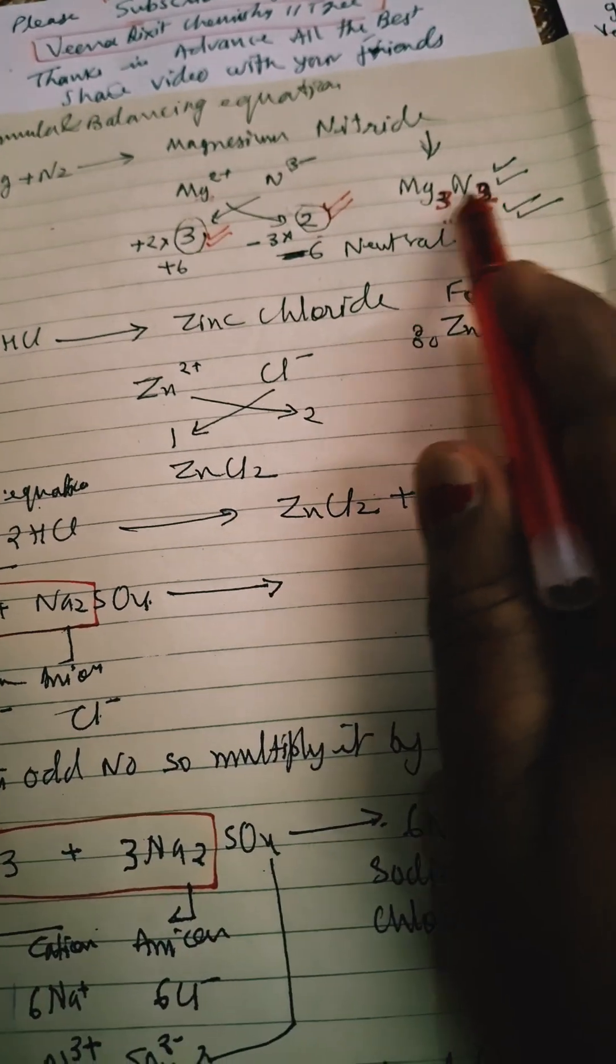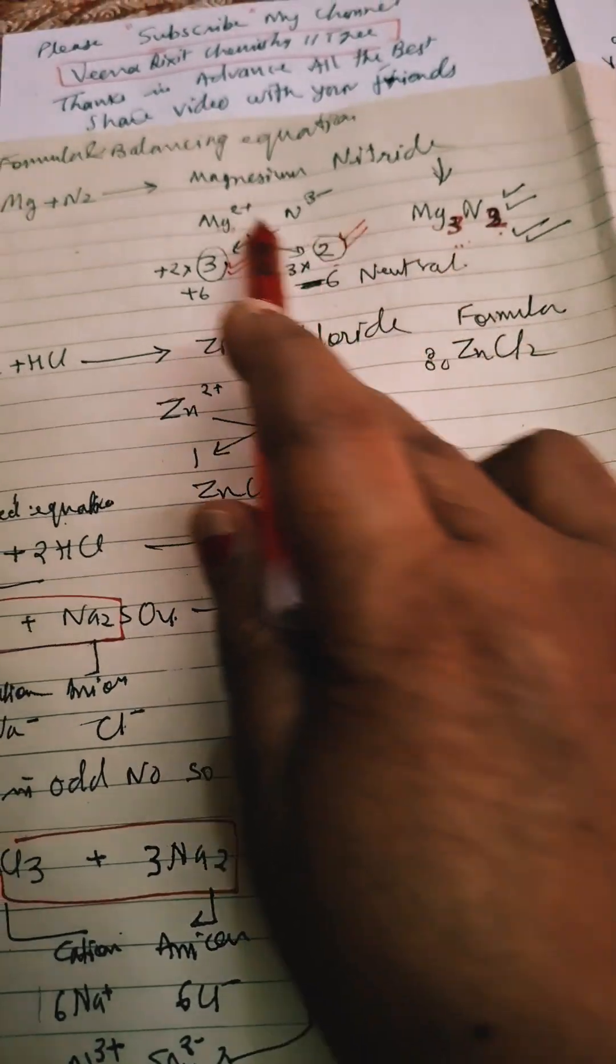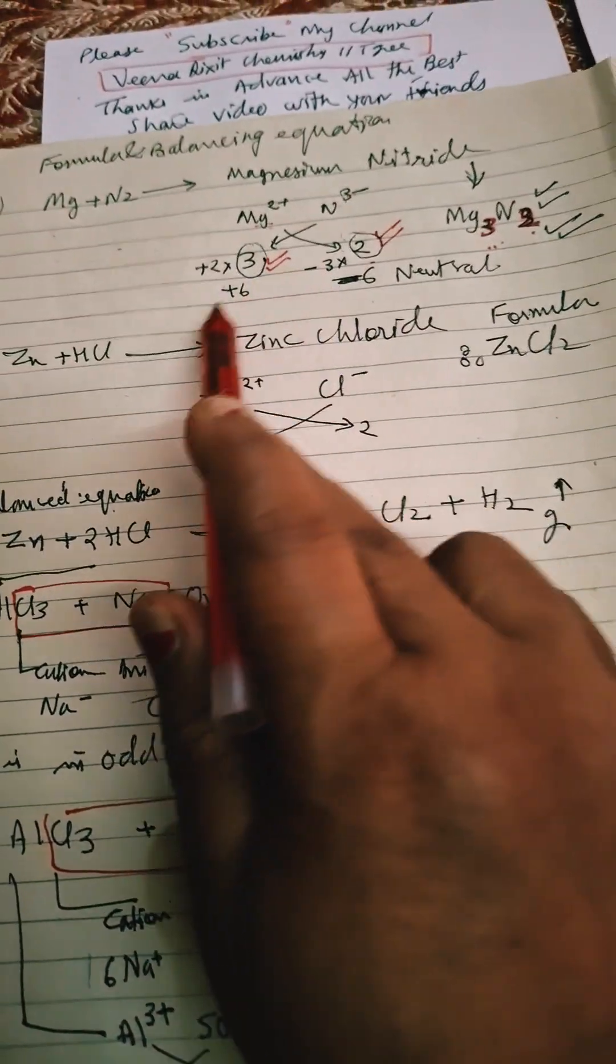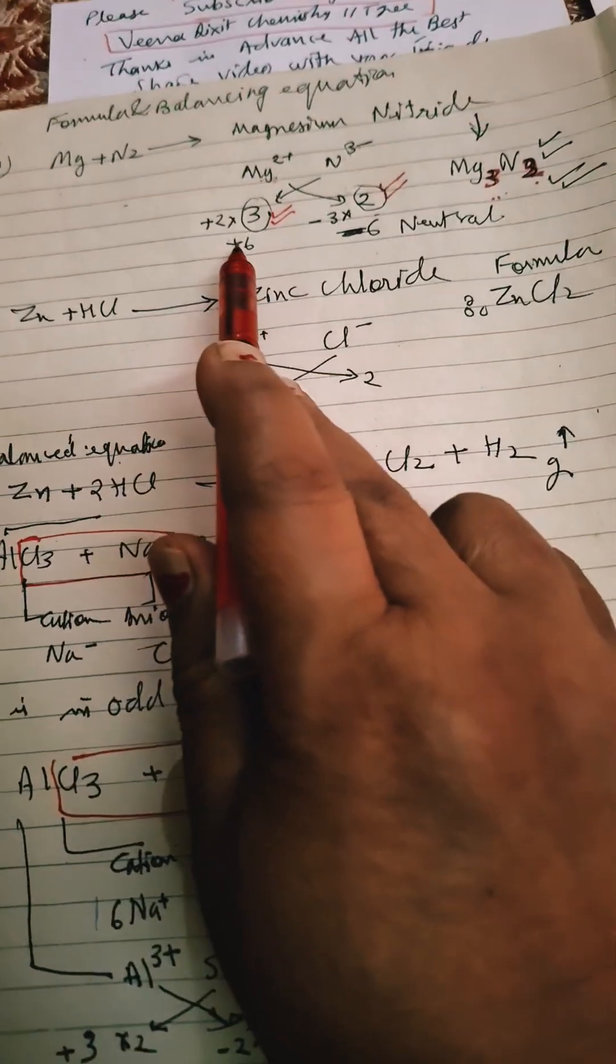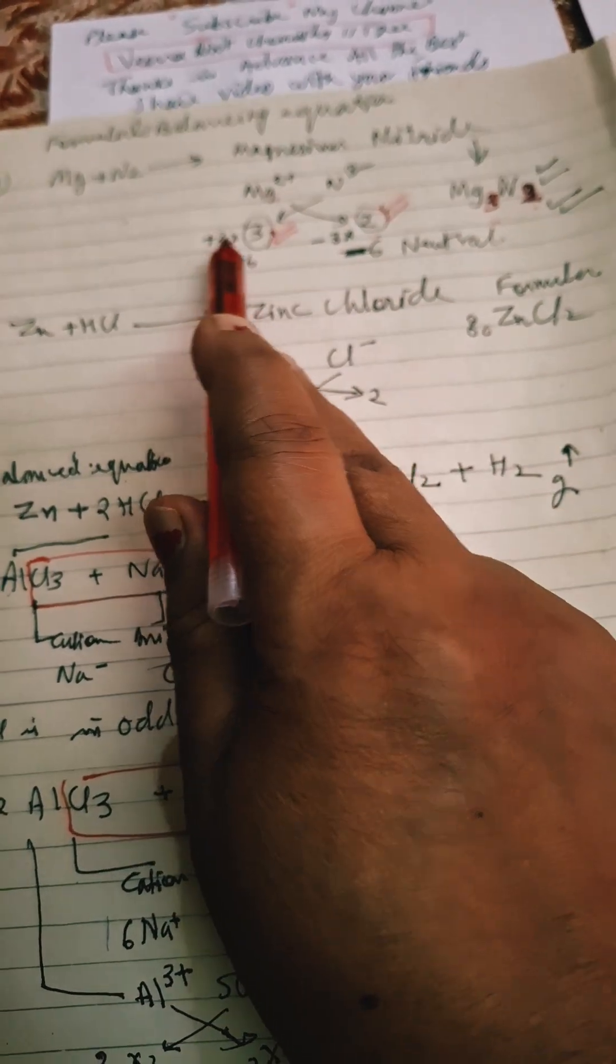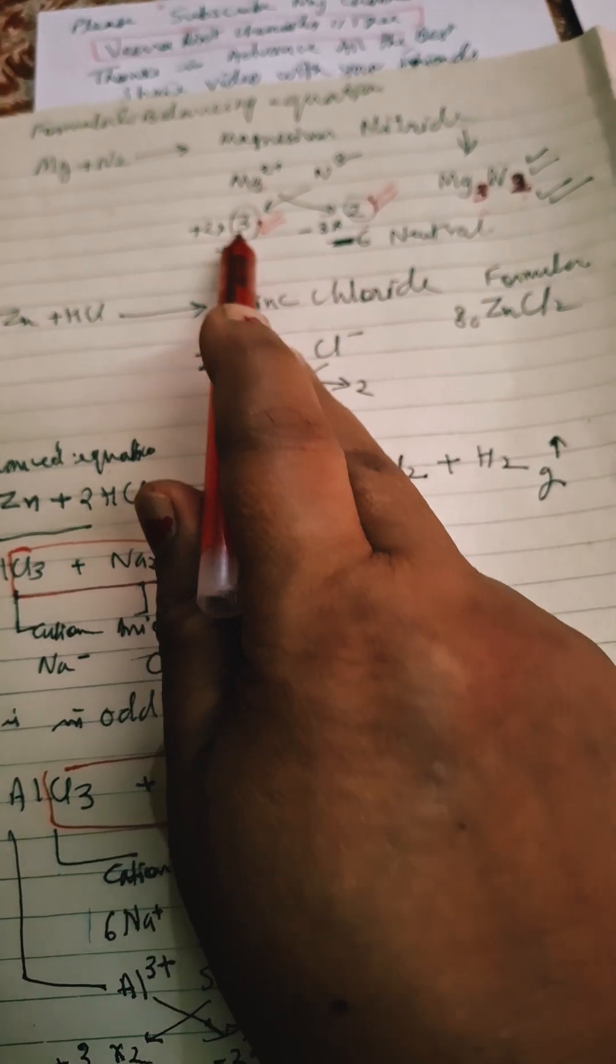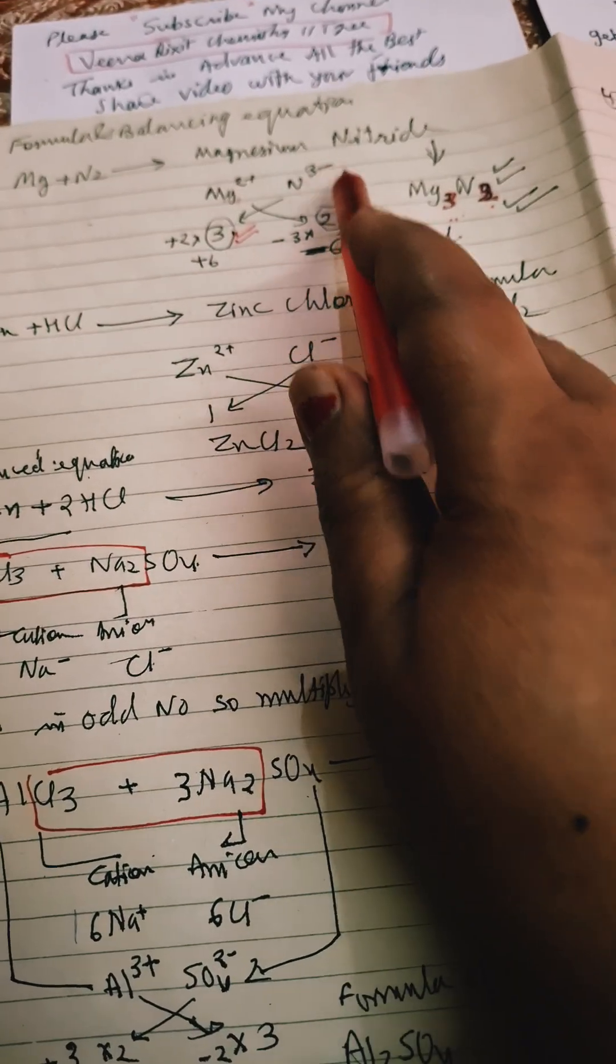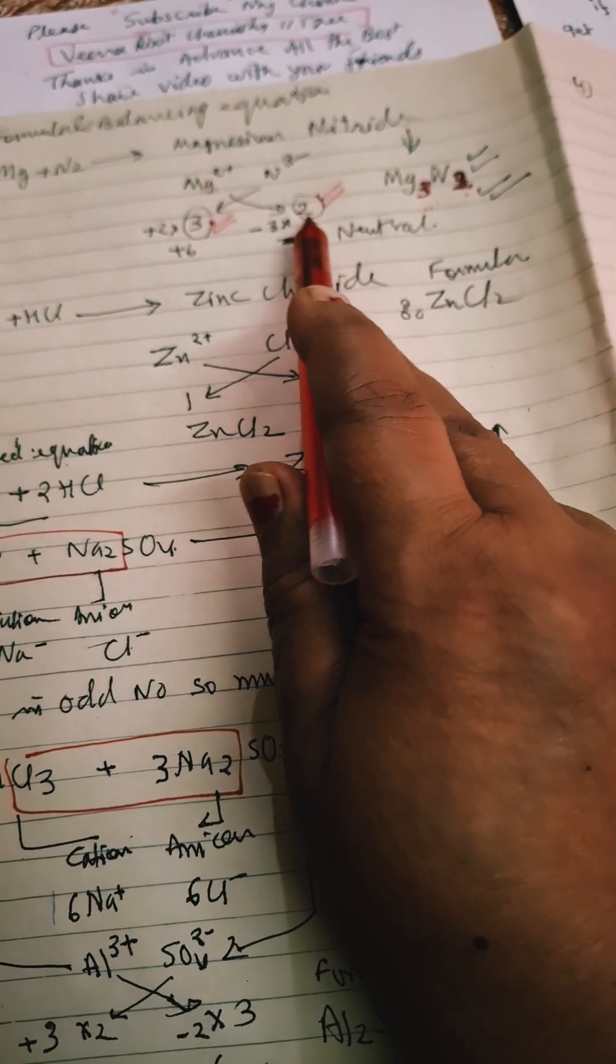Subscript of magnesium is having 3. So these charges will be balanced by equal and opposite charges here. If you multiply this 2 positive charge by 3, only magnitude will be considered, so 6 positive. Here -3 charge is here, multiply by 2, magnitude of magnesium, 2 charge, so it is +6 -6 neutral.